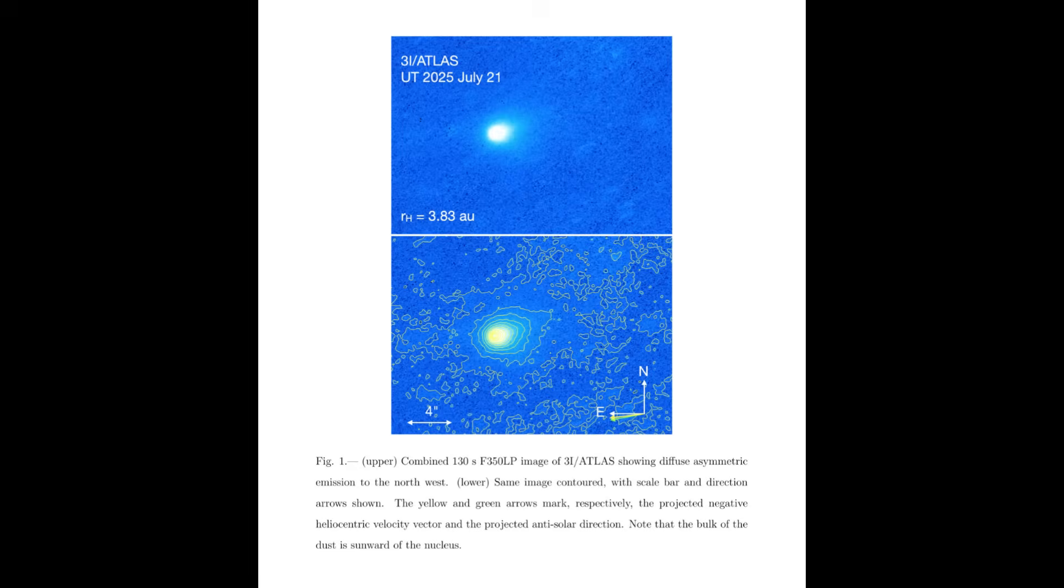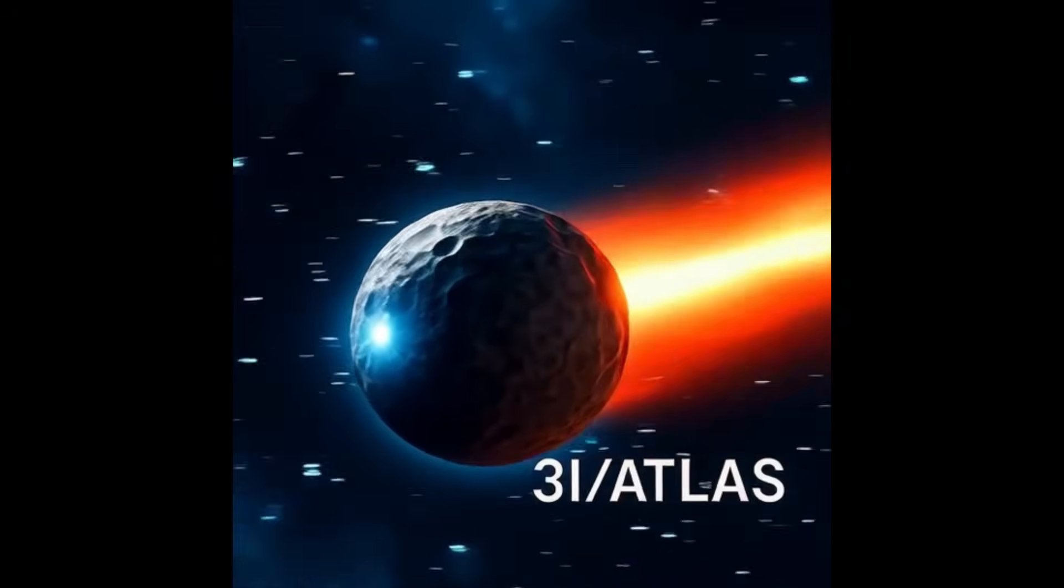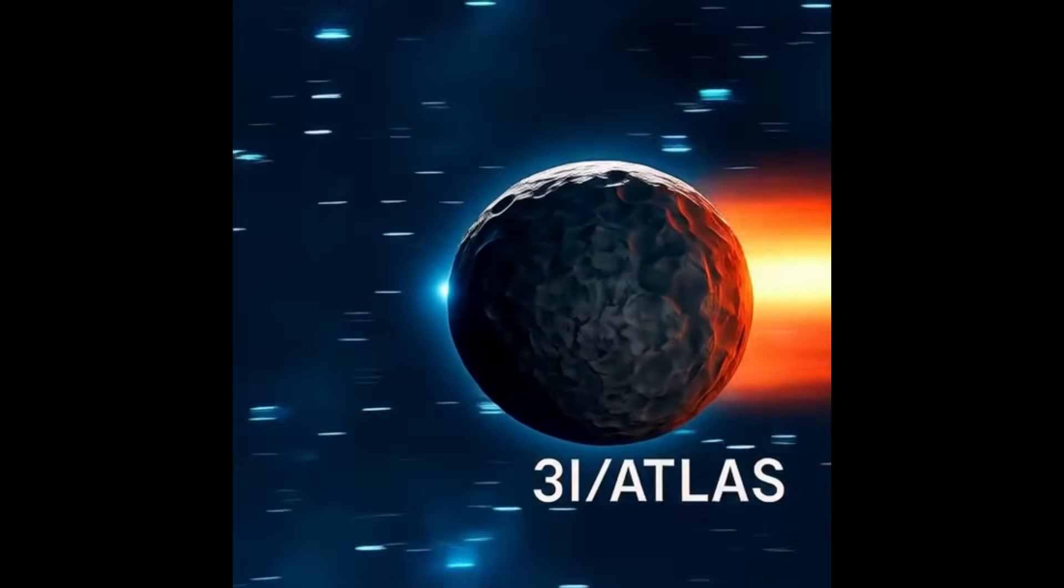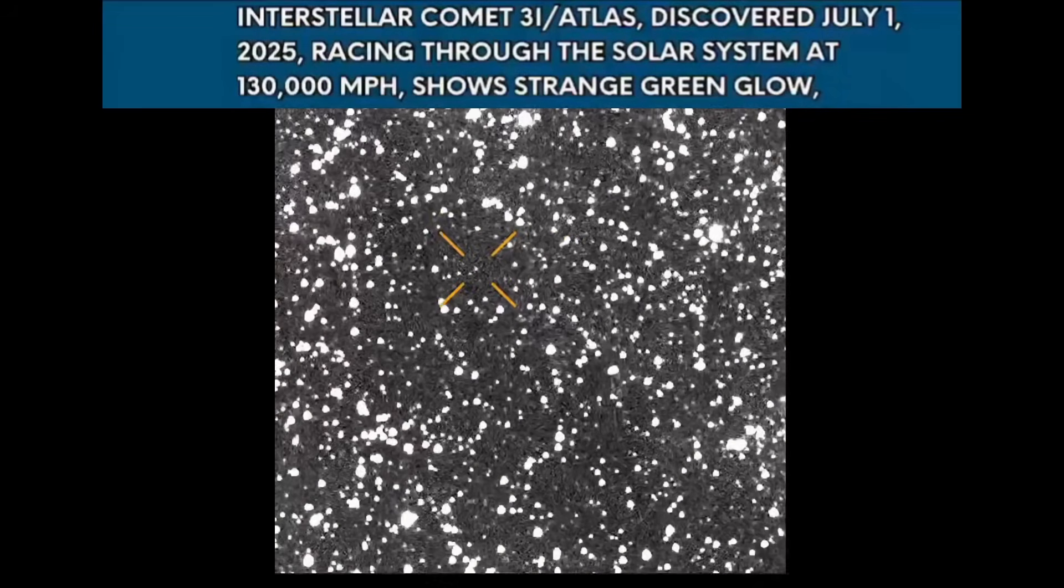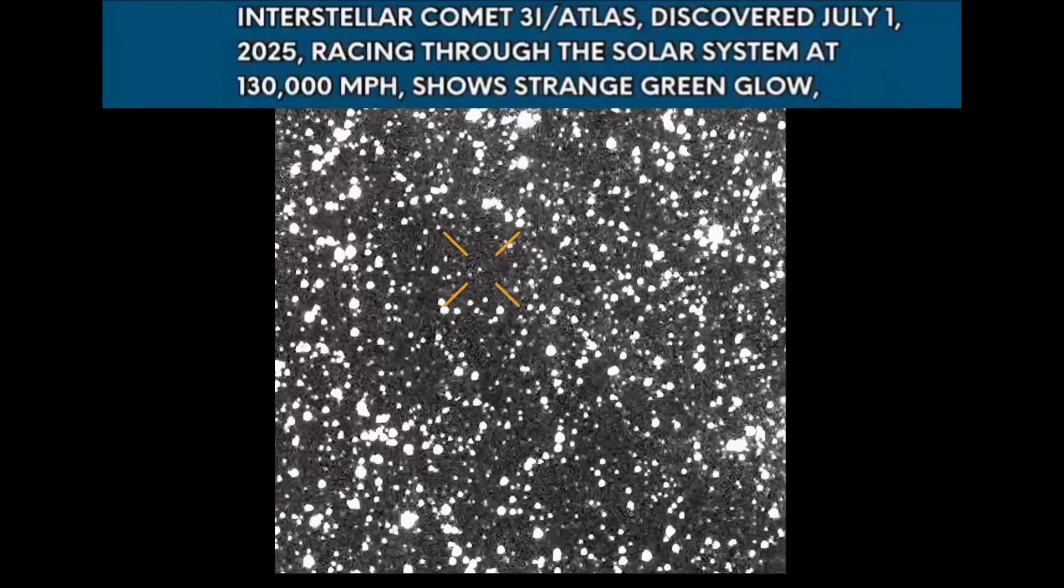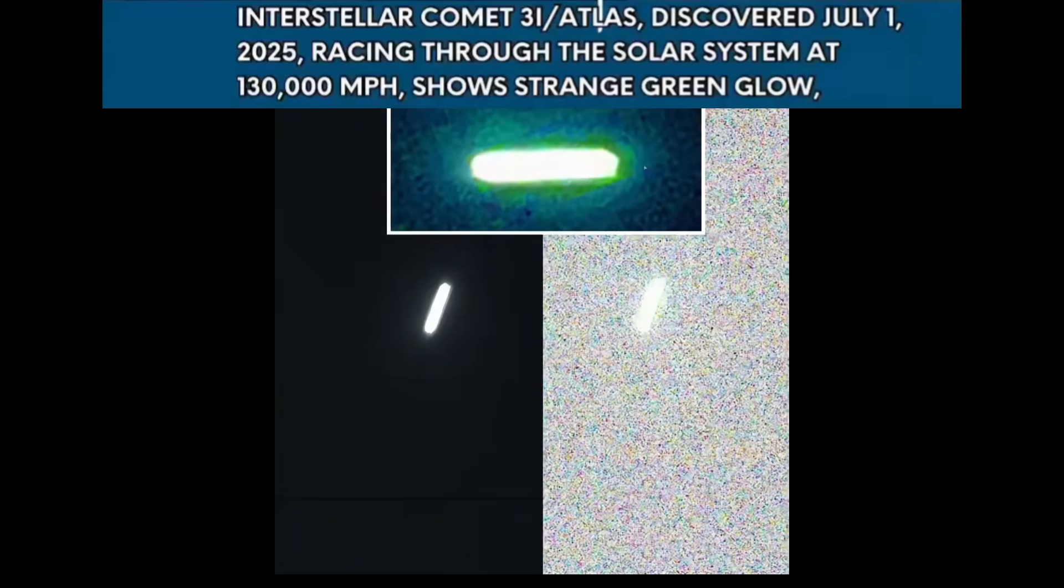Then came the image that changed everything. As the Hubble Space Telescope sent back its first clear, long-exposure photos, scientists fell silent. The images were undeniable. While there was a faint, chaotic tail pointing away from the sun as expected, there was something else, something impossible. A narrow, focused beam of light was projecting from the front of the object, pointing forward along its path of travel. It wasn't a tail. It was a headlight.